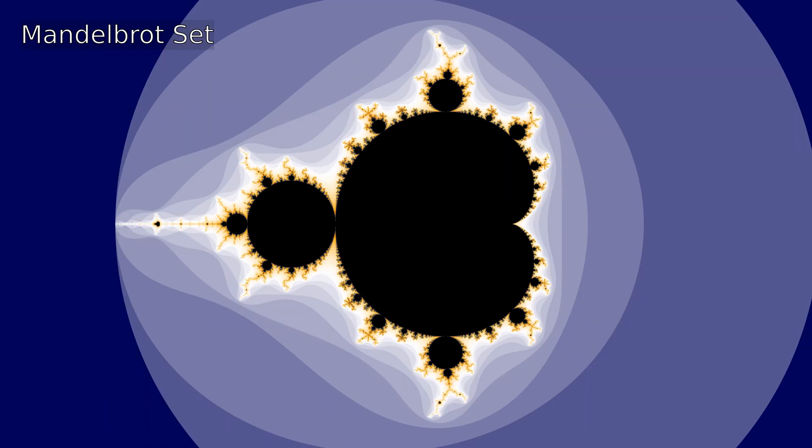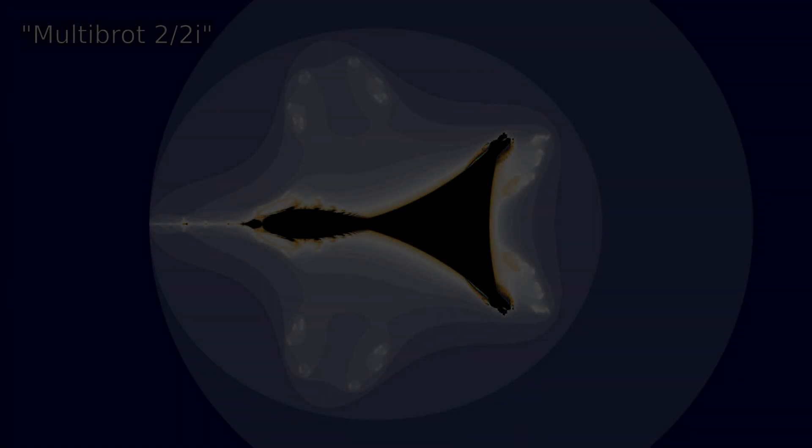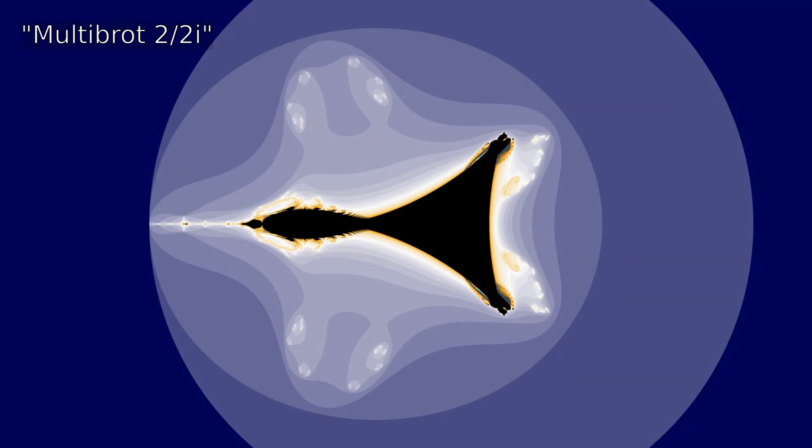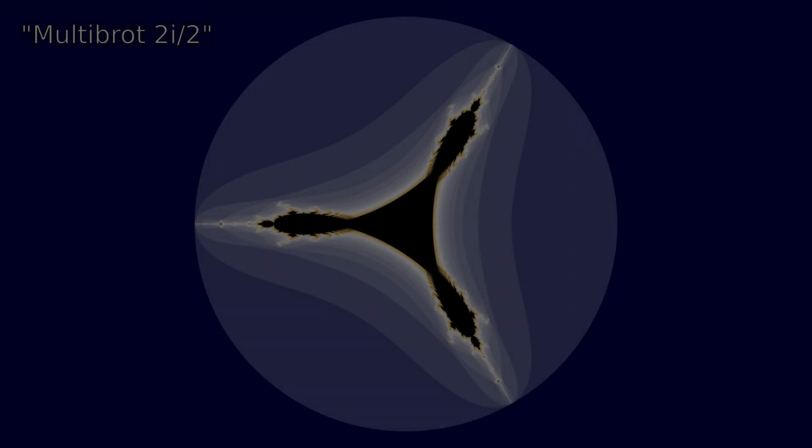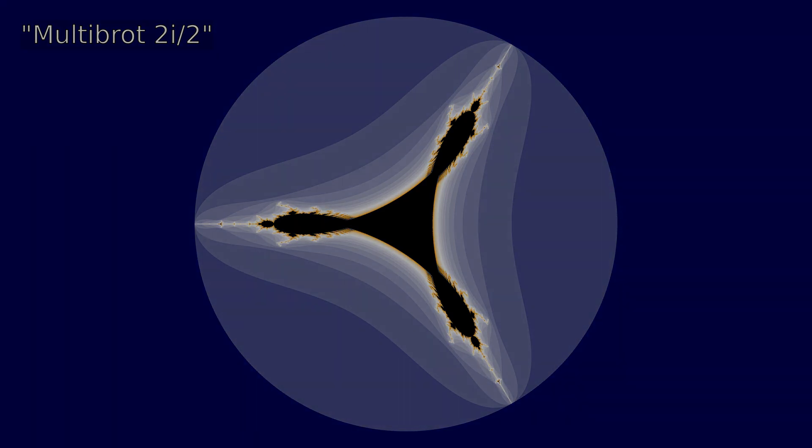Now I am playing around a bit more with the math of the Mandelbrot set. Here I have looked into changing the signs of the formula between the iterations, one way around or the other.